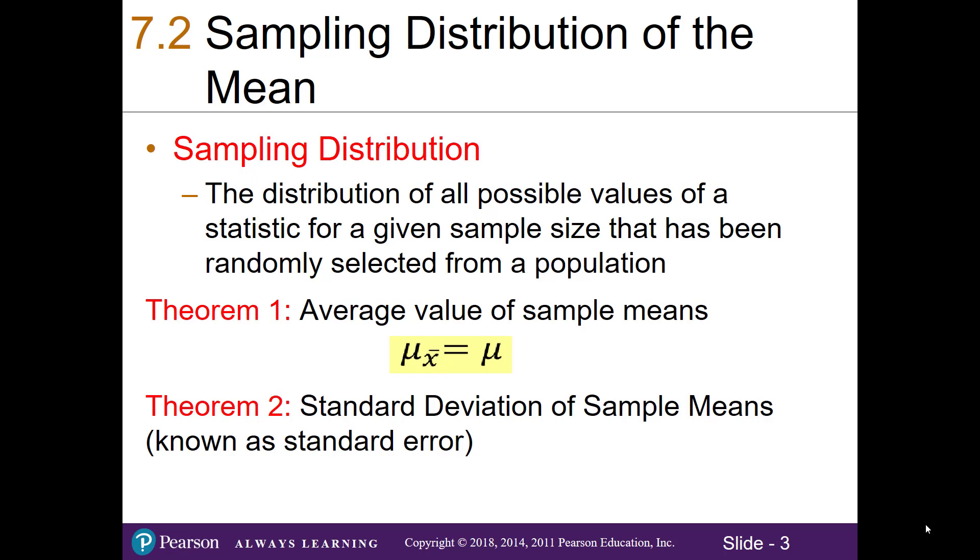Theorem 2 is known as the standard deviation of sample means, also known as the standard error. If I take all my possible samples and their sample means, the standard deviation of these is population standard deviation divided by the square root of n.